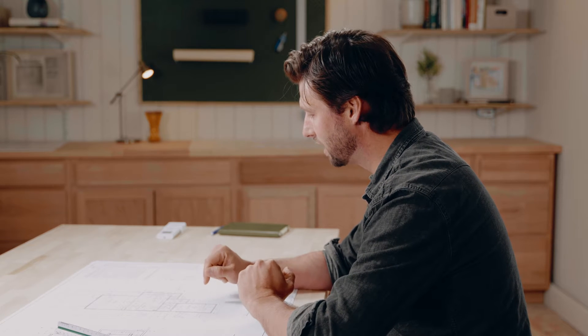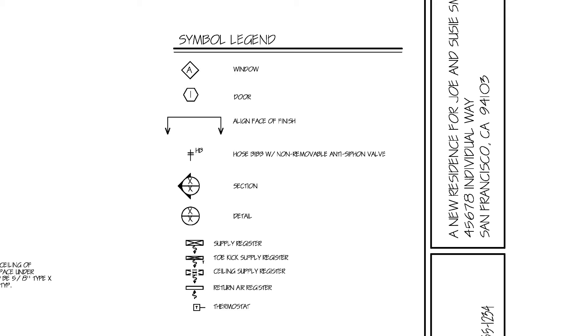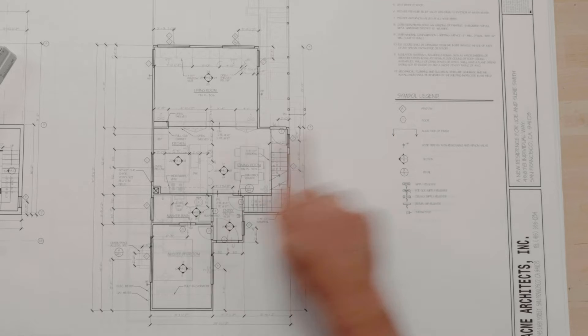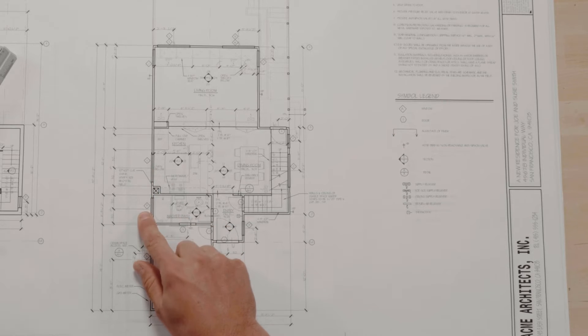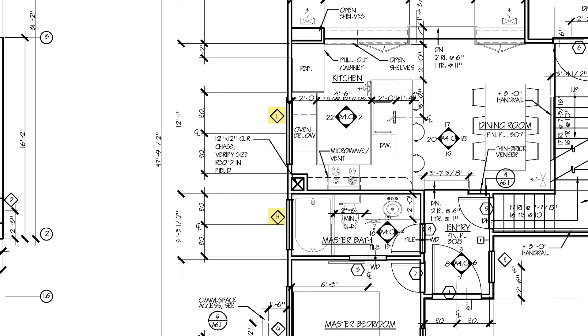Let's look at some of the different schematics here. We've got our legend that helps us know what we're looking at. We have the windows, which are called out with a diamond shape here. So we have a window here, we have a window here, and you see that there's letters inside each diamond. I don't know what this window is, I don't know what size it is, I don't know any of the technical details of that window, but I do know that it's diamond H.